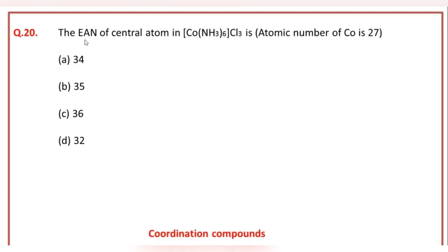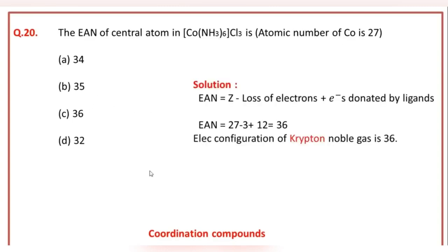The EAN, effective atomic number, of the central atom in Co(NH3)6Cl3 is: the atomic number of cobalt is supplied, that is 27. The correct answer option is C, that is 36.